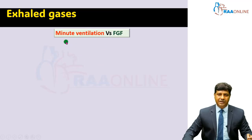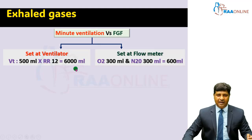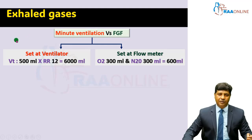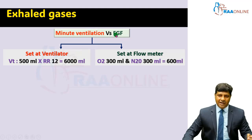The minute ventilation is what we set at the ventilator. Even in the low flow anaesthetic technique, the minute ventilation is not going to change because we set it at the ventilator. For example, if you set a tidal volume of 500 ml and a respiratory rate of 12, the patient will receive a volume of 6000 ml. What determines the components of this 6000 ml is the low flow anaesthetic technique. Fresh gas flow is simply what is set at the flow meter.